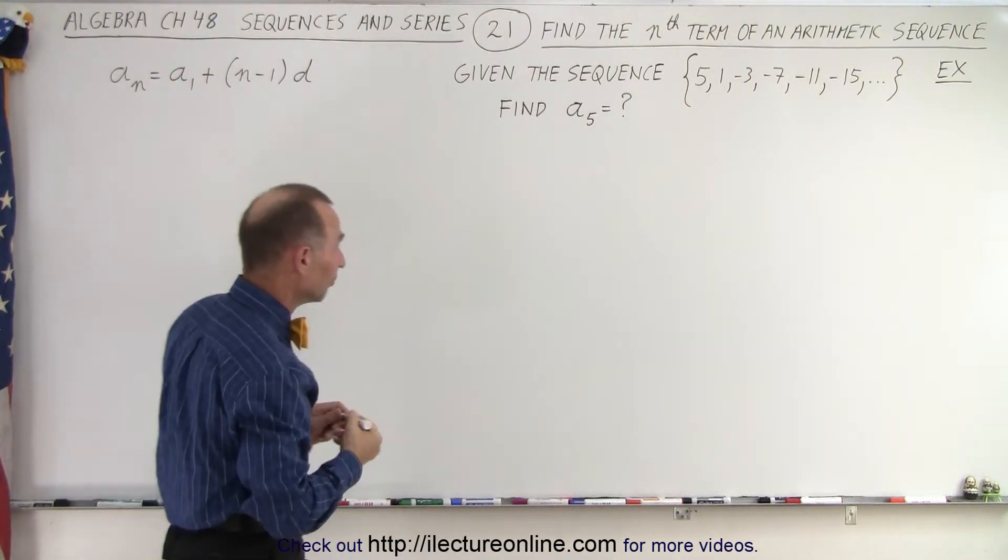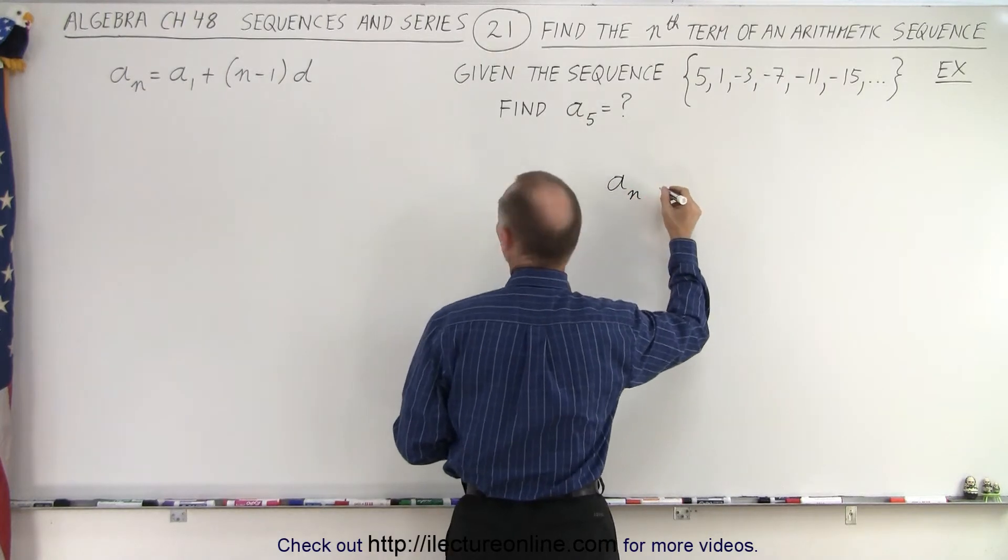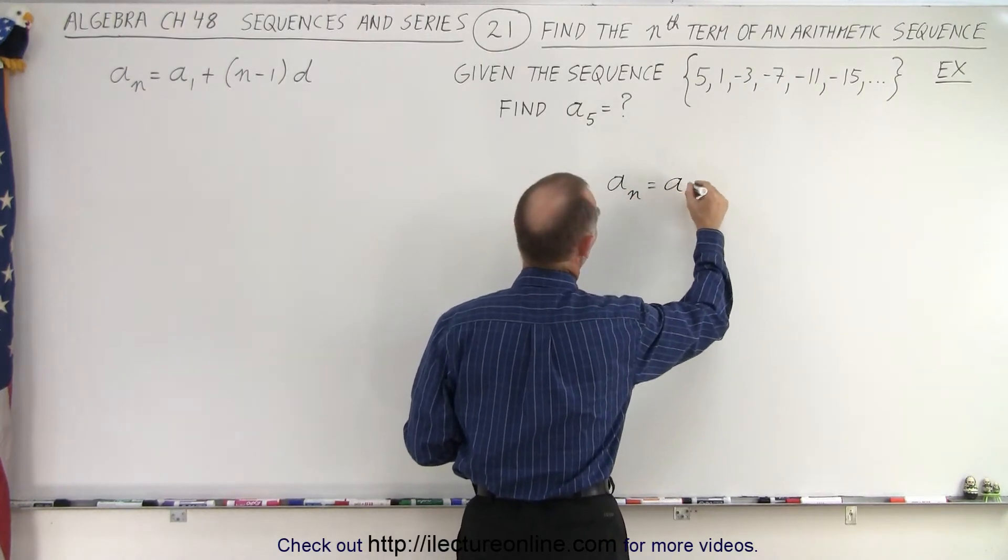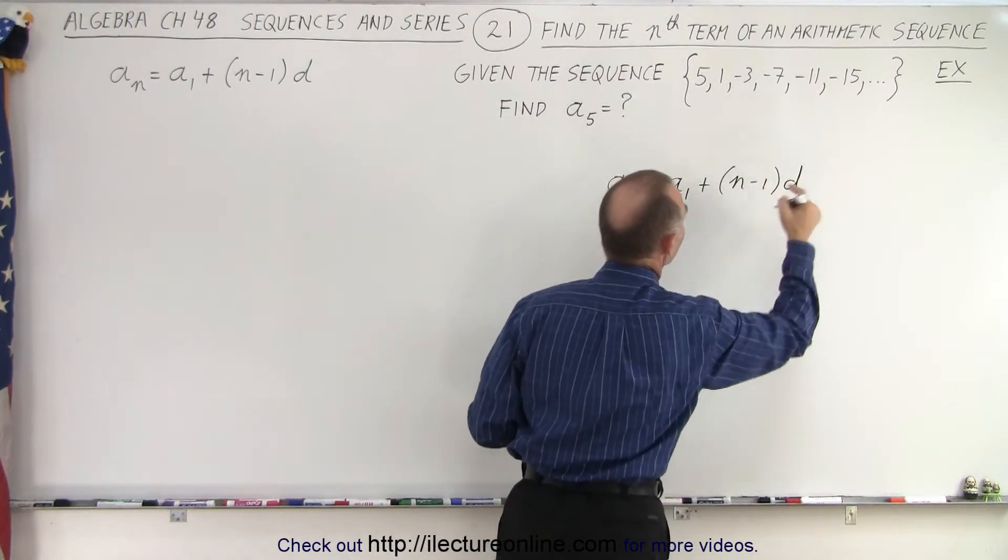Well first of all let's write down the general formula. It says that the nth term of a sequence is equal to the first term plus the quantity n minus 1 times the common difference.